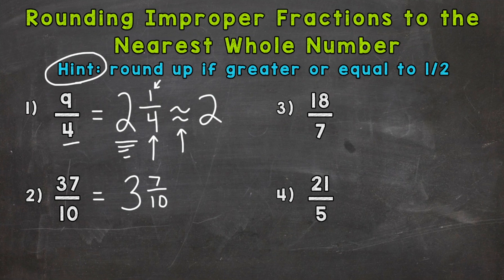So is 3 and 7 tenths closer to 3, or is it closer to 4? Let's take a look at our fractional part here. 7 tenths. Well, we know 5 tenths is half, so 7 tenths is greater than half. Therefore, we round up. 3 and 7 tenths rounds to 4. It's closer to 4 than it is to 3.